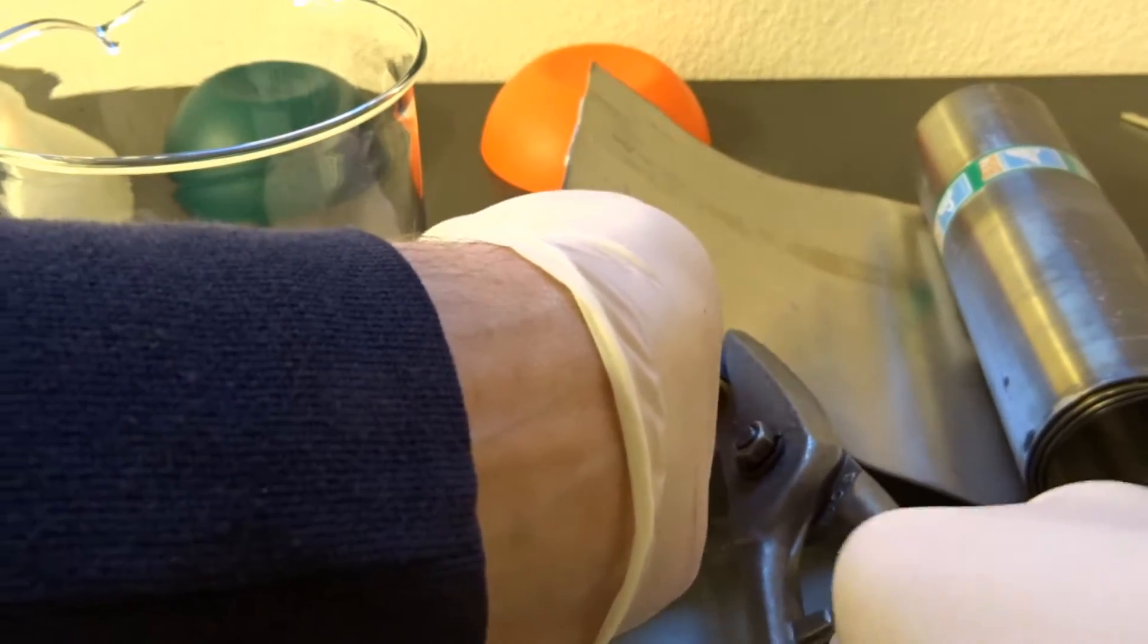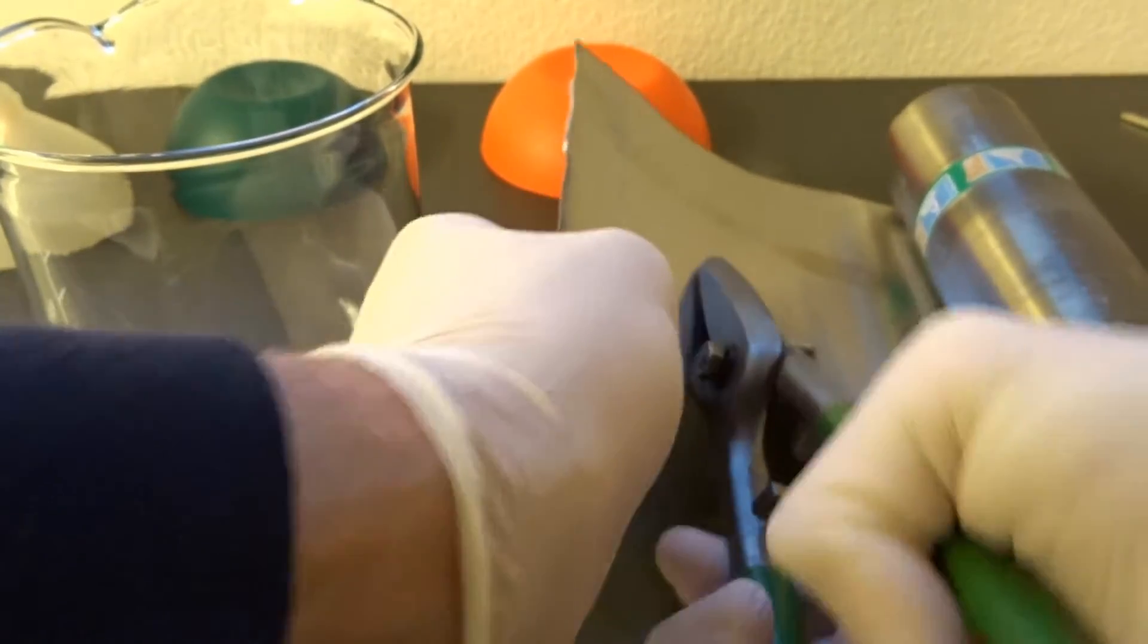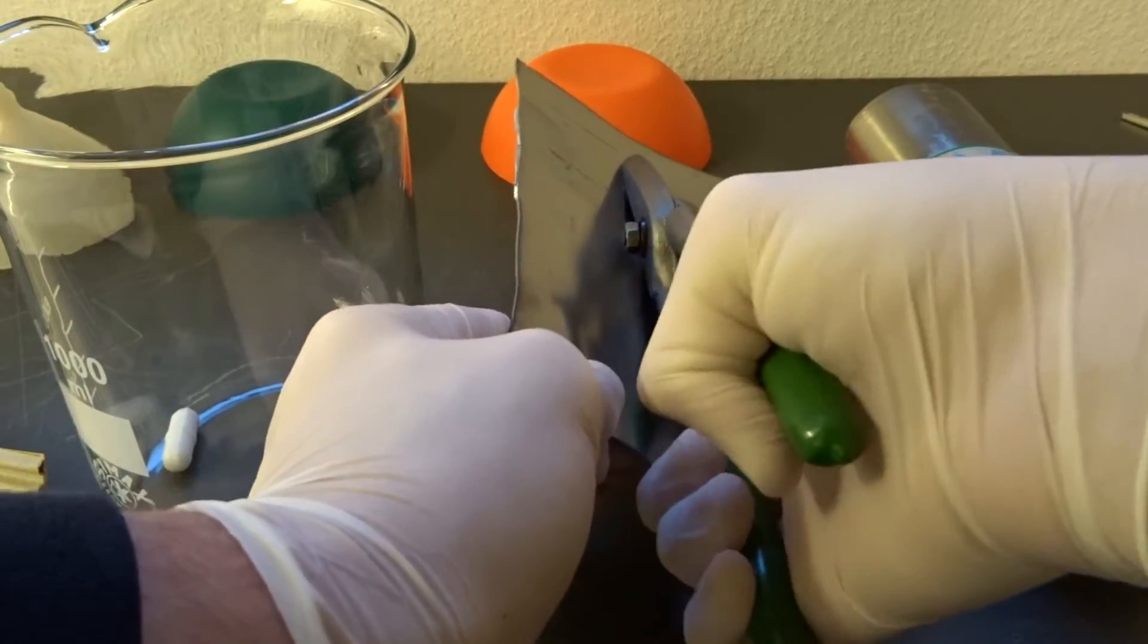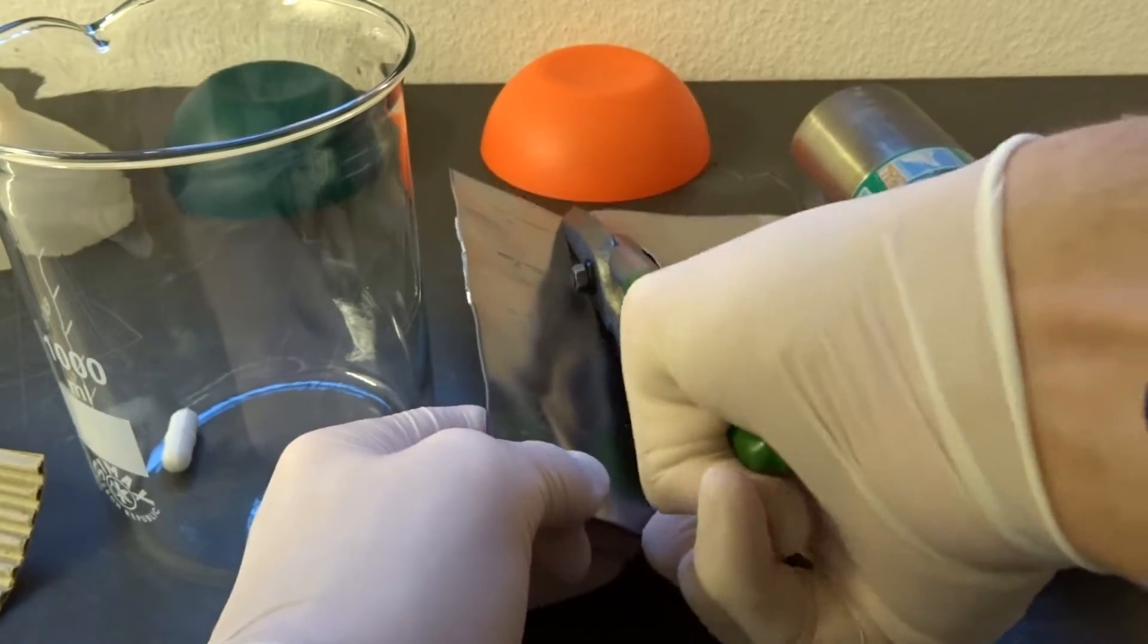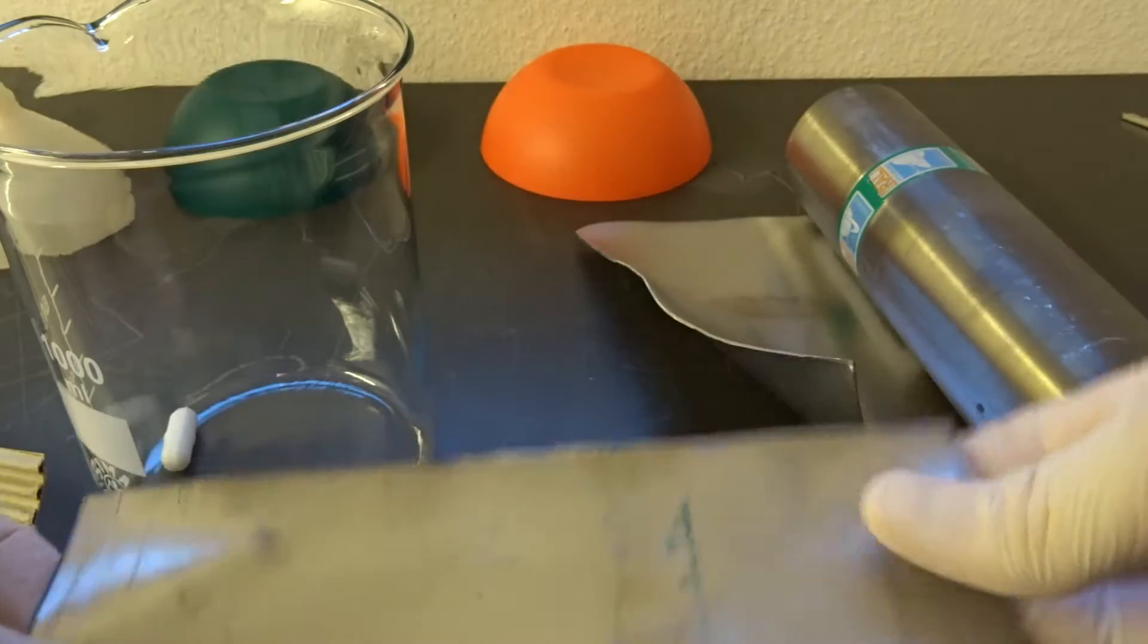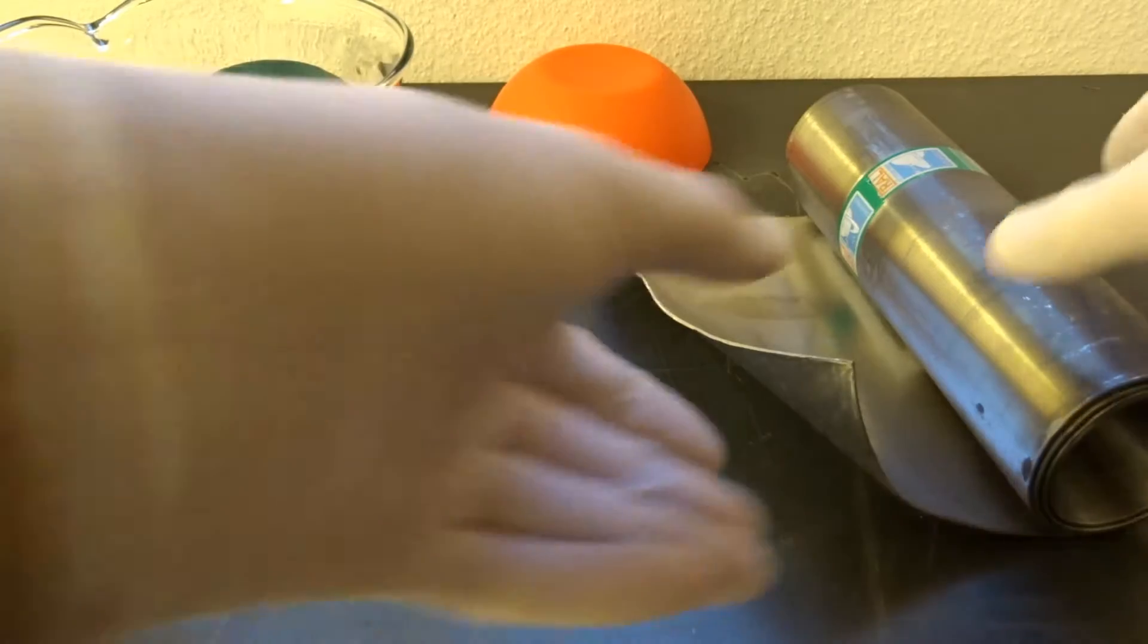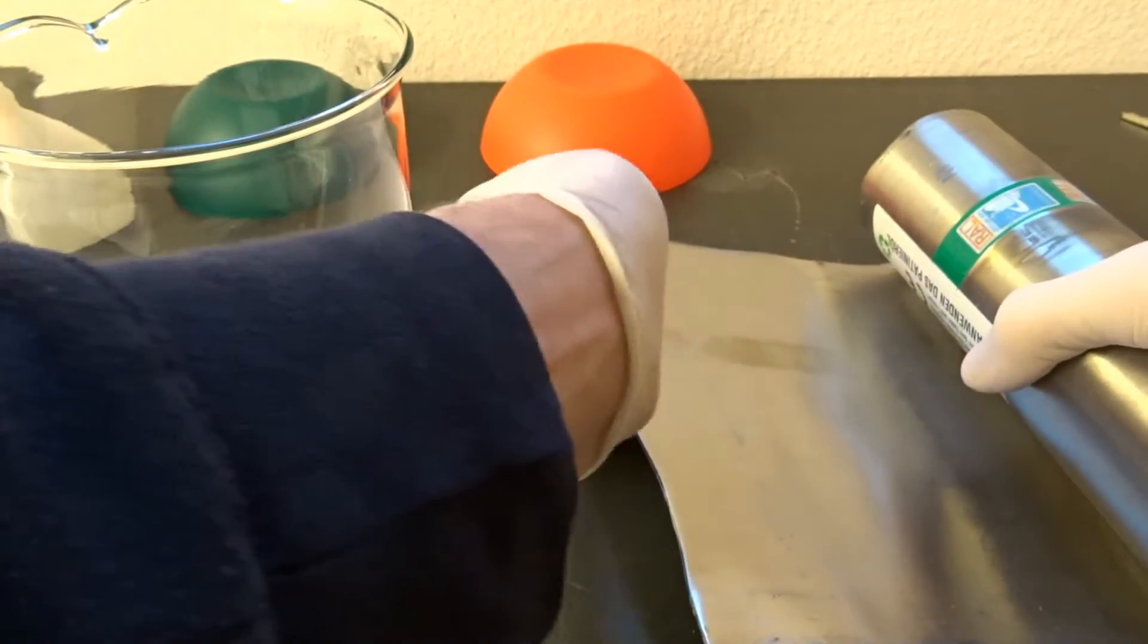This metal is super soft, really cuts like butter. I'm wearing gloves today because my hands are wounded and I don't want to get any lead inside them. Here we have our first electrode. I just need to remove that piece of paper, and I'll quickly cut off a second one.